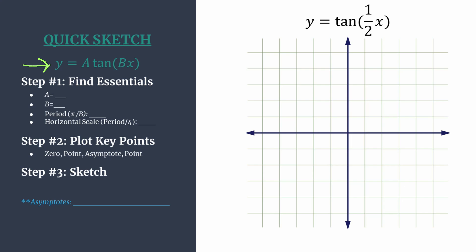In step one we find our essentials starting with a or the leading coefficient. We don't see anything here that's an understood one and that's going to help us with the y-coordinates of our tangent curve shaping points in step two.